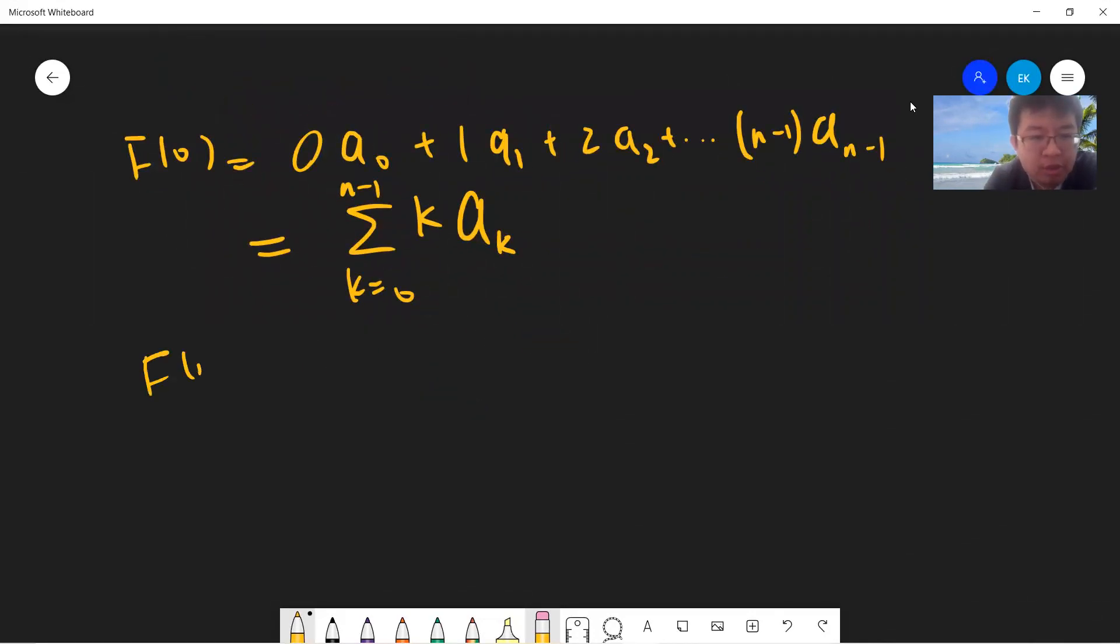Now I can consider f(1), where everything is shifted by right. So a_0 becomes here and a_1 becomes there. The first term is 0 times a_(n-1), so the final term will be a_0, a_1, up to a_(n-2).